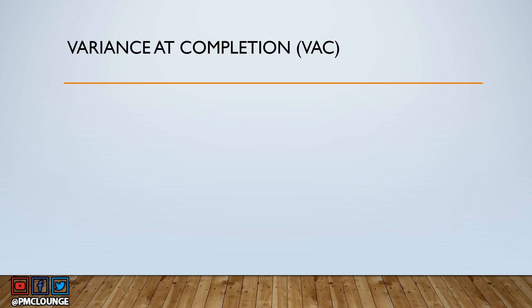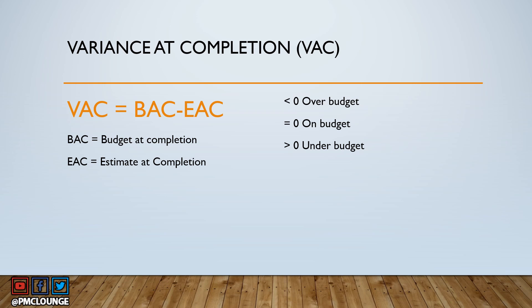Variance at Completion, or VAC: VAC equals BAC minus EAC, where BAC is Budget at Completion and EAC is Estimate at Completion. This tells you the difference between your budget and your estimate at the completion phase. If VAC is less than zero, you are over budget — bad news. If greater than zero, you are under budget — best news. If equal to zero, the project was completed exactly on budget.